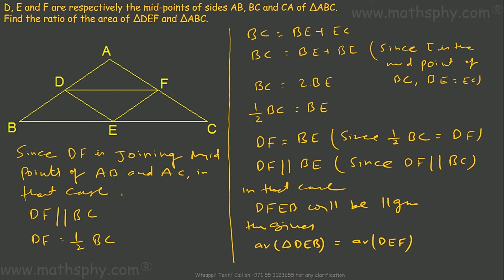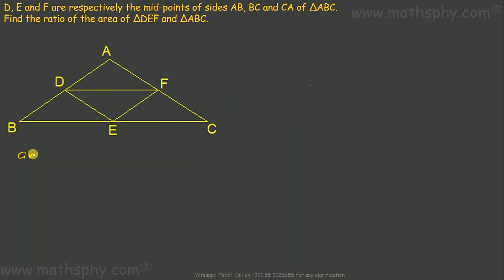Similarly, DF is equal and parallel to EC, which makes DFCE a parallelogram, giving us area of triangle DEF equals area of triangle CEF. Also, EF is parallel and equal to AD, making AFED a parallelogram, so area of triangle DEF equals area of triangle ADF.